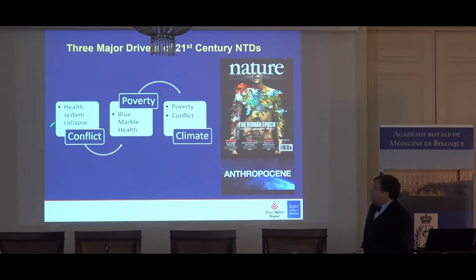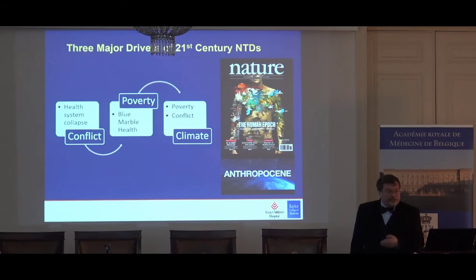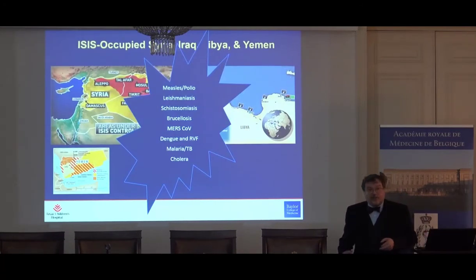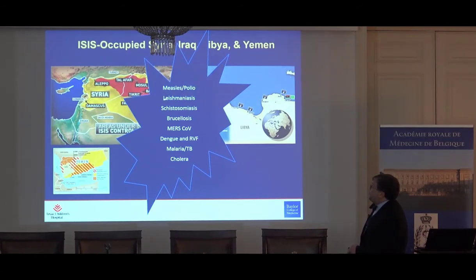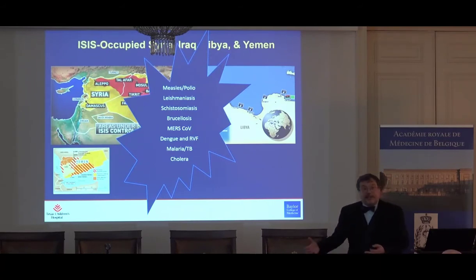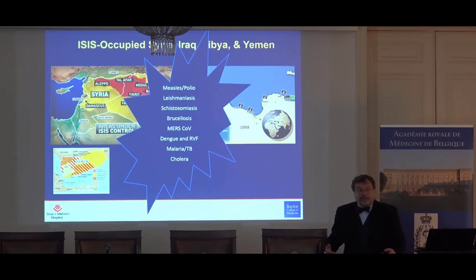On conflict: we're seeing a dramatic rise in disease in the Middle East, particularly in Syria, Iraq, Libya, and Yemen. We've seen the return of measles and polio, but also vast numbers of cases of leishmaniasis and schistosomiasis. With no functioning international borders, animals are being trafficked, leading to zoonotic diseases like brucellosis. This is where the next Ebola-like outbreak will come from — something very dramatic.